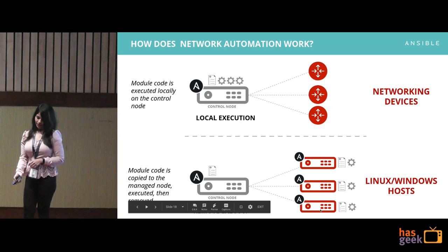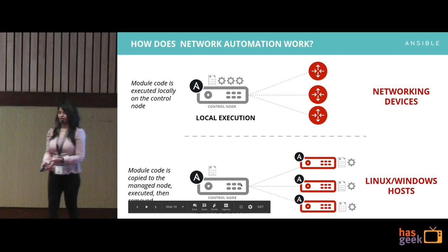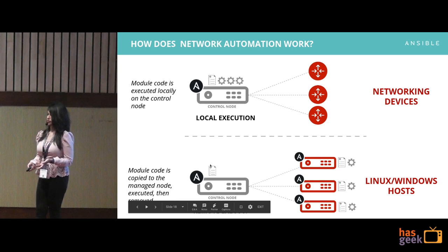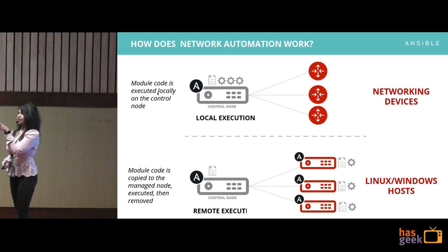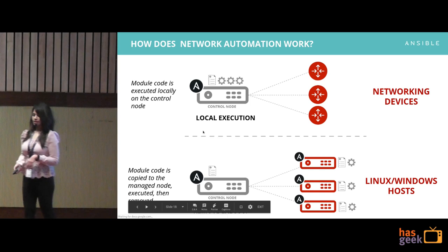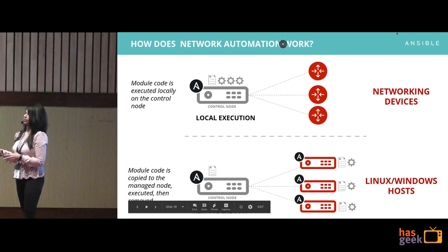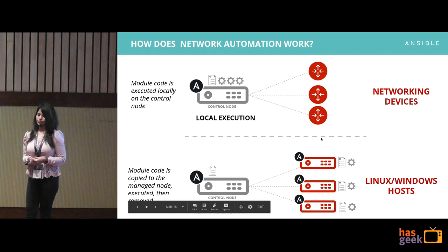There's an important difference between how network automation works versus Linux or Windows automation. For Linux or Windows, when you run Ansible on your control node, it copies module code to the remote device and uses its Python interpreter to run it and return output to stdout. For networking, it's a bit different — networking looks like a Linux environment but it's not, because it does not have a Python interpreter. So we run the modules locally on the control node and just fetch or push the configuration to the device.